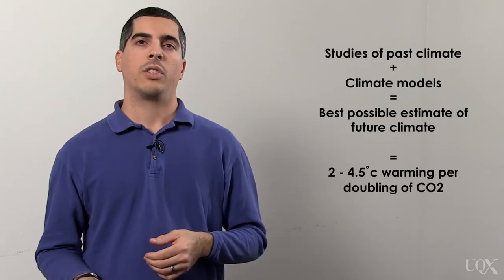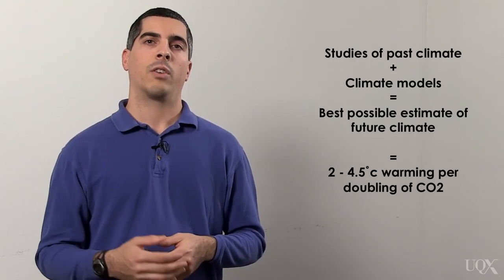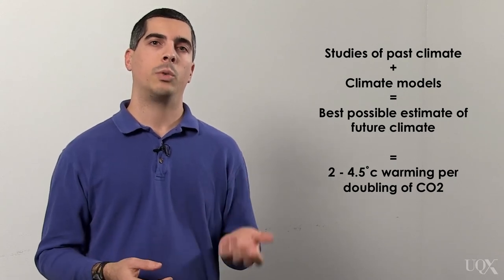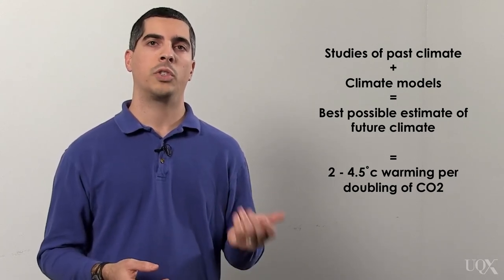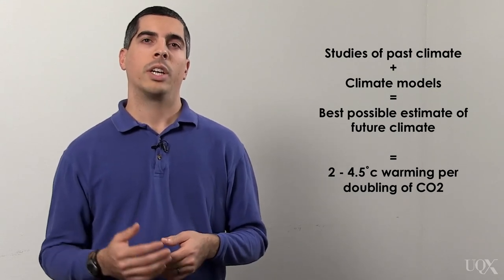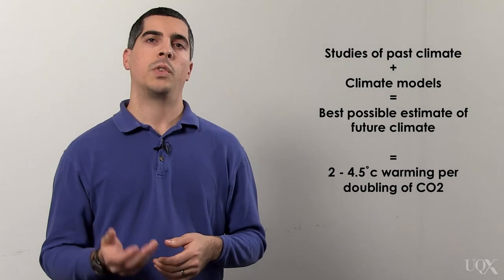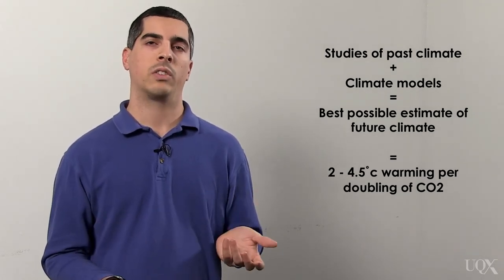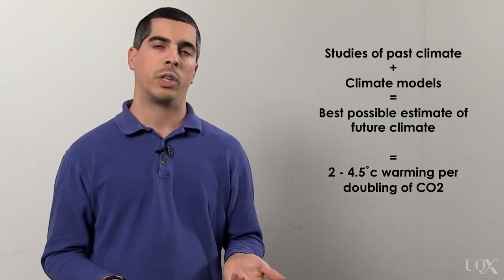Studies using historic climate change and global climate model methods have arrived at consistent results, estimating the climate sensitivity between about 2 to 4.5 degrees Celsius global surface warming if we double the amount of carbon dioxide in the atmosphere. In recent years, a few studies using modern measurements with simple climate models have arrived at somewhat lower estimates, around 1.2 to 4 degrees Celsius.